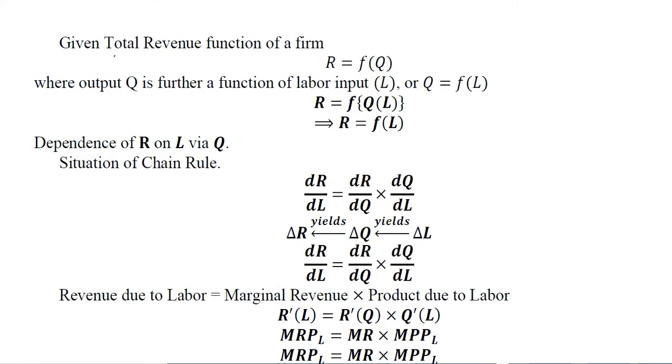The total revenue function of a firm is given. Output, represented with Q, is affecting the level of revenue. Output is further a function of labor. The more labor we hire, the more output will be there, selling which we will get more revenue. This is a very basic economic concept that we observe in firm analysis.